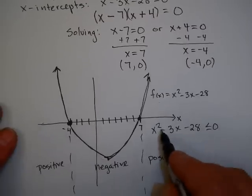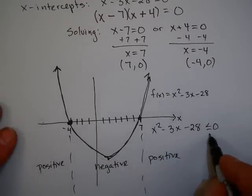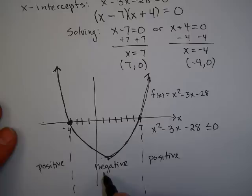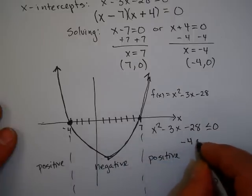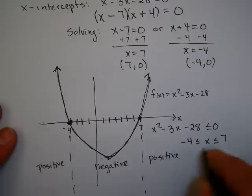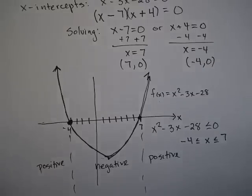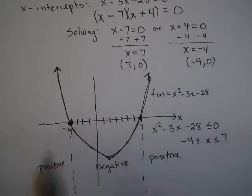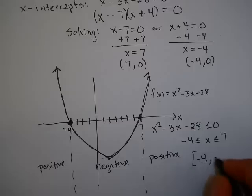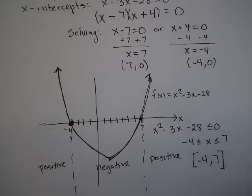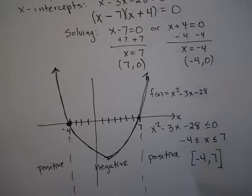Now, think about the original question. The original question was, when is x² - 3x - 28 less than or equal to 0? Well, that's when it's either negative or 0. So just thinking about this, I know that this is between negative 4 and 7. And we include negative 4 and 7 because we have that less than or equal to property there. If you remember from earlier in this course, this gives me the interval [-4, 7]. And that's our solution. So it could be written this way or this way. Let's look at another one.